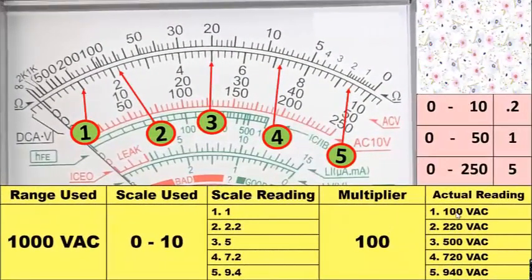Last example, using range 1000 volts AC. In an AC voltmeter, there are only 4 ranges being used: first is 10VAC, followed by 50VAC, then 250VAC, and the last one is 1000VAC. For this range, we are using 1000VAC. The skill used is 0-10, and the multiplier is 100.